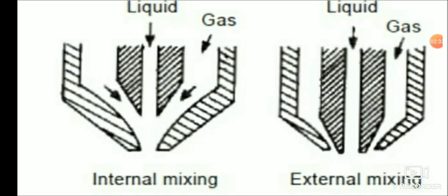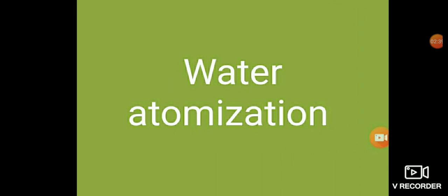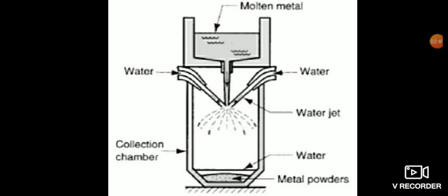Water atomization: In water atomization, a high-pressure water stream is forced through the nozzle to form a dispersed phase of droplets which then impacts the metal stream. In this method, large quantities of energy are required to supply the water at high pressure.